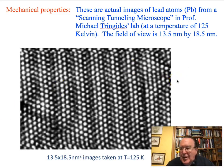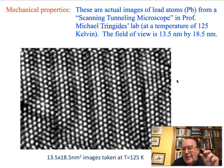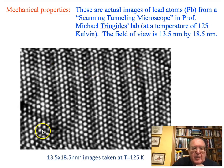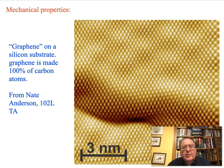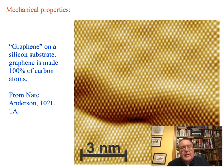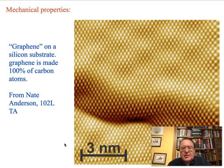These days you can actually look at atoms. This is Michael Tringkides' lab — he has a scanning tunneling microscope. You can actually image individual atoms. These happen to be lead atoms on a silicon substrate. Professor Tringkides knows the size of his field of view: 13.5 nanometers up and down. So you count the atoms and you know it's 13.5 nanometers — you know the size of a lead atom just by counting. This is graphene — 100% carbon atoms all connected together in a hexagonal matrix — with a scale of 3 nanometers. The ability to image individual atoms is actually a very recent development in physics.